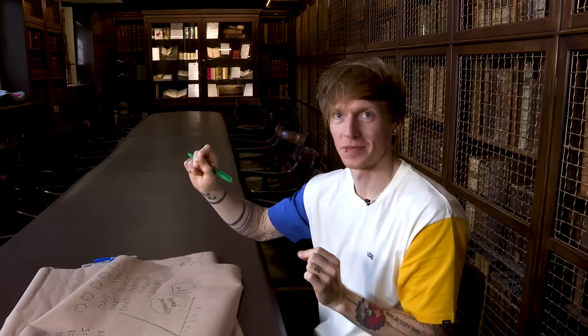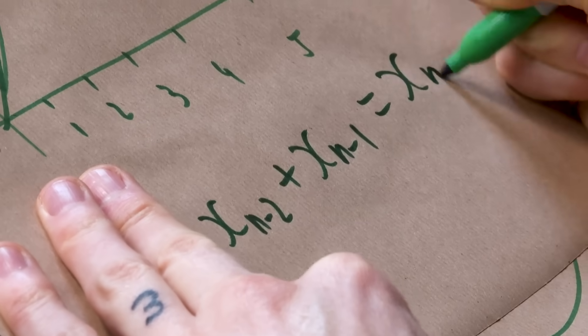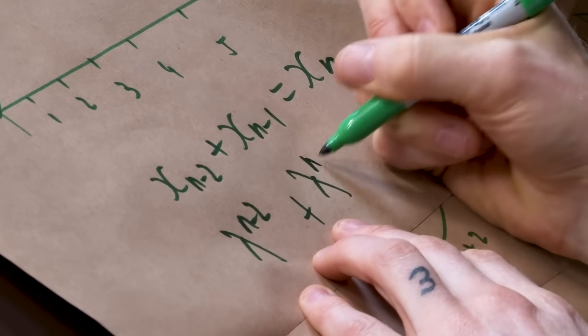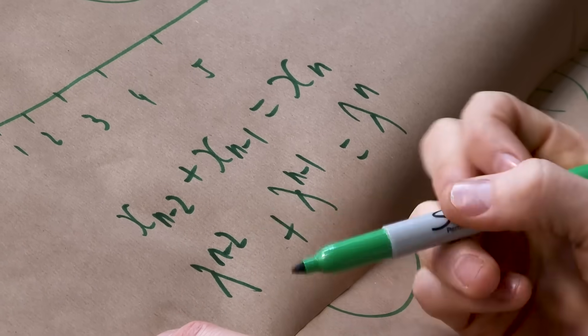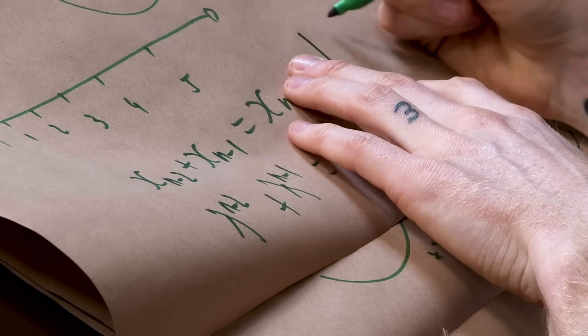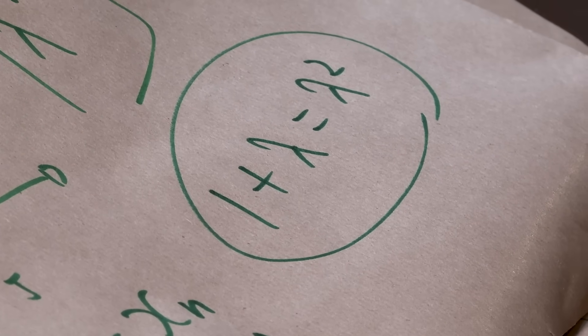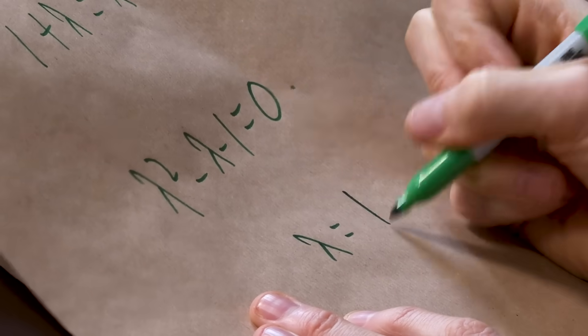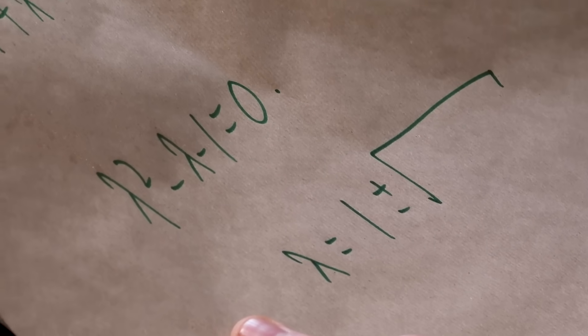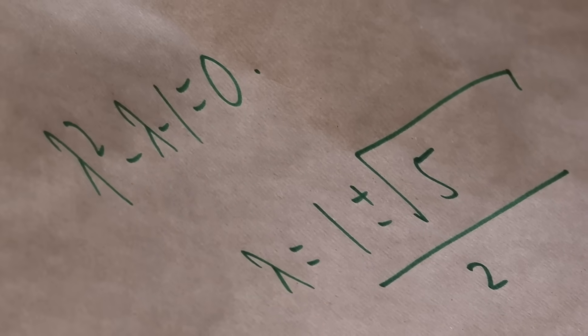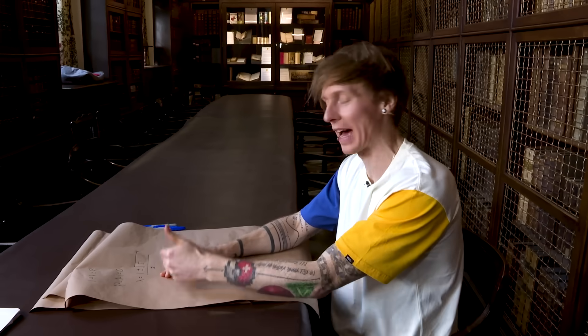So we need to try a solution of the form lambda to the power n. We need to take this and substitute it into our recurrence relation to figure out the base number we're taking higher and higher powers of to give us this exponential growth. We had xn minus two plus xn minus one equals xn. That's lambda to the n minus two plus lambda to the n minus one equals lambda to the n. We can divide everything by lambda to the n minus two, and that becomes one plus lambda equals lambda squared.